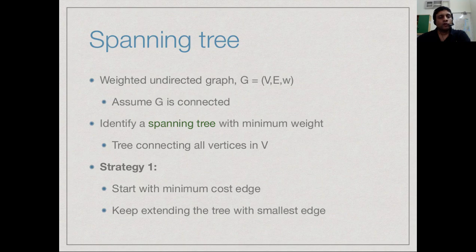The problem domain is a weighted undirected graph where V is the set of vertices, E is the set of edges, and W is the weight function. We assume G is connected because if not, there is no way to build a spanning tree. A spanning tree is a subset of the edges which connects all the vertices. So G is a connected weighted undirected graph and we want to identify a spanning tree with minimum weight.